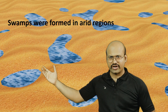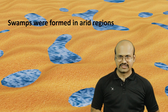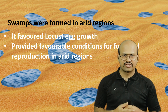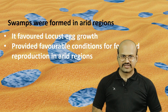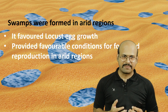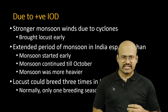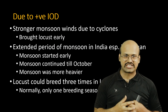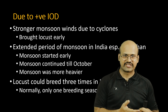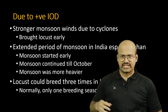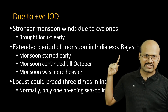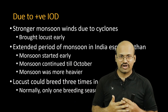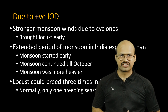Water accumulated in those desert-like conditions, creating an abundance of moisture that promoted egg growth and provided food for hatchlings, causing the locust population to multiply. Additionally, stronger monsoon winds — amplified by the cyclones — brought locusts to the Indian subcontinent earlier than normal years. India also experienced an extended monsoon, especially in Rajasthan, which started early, continued till October, and was heavier than usual.